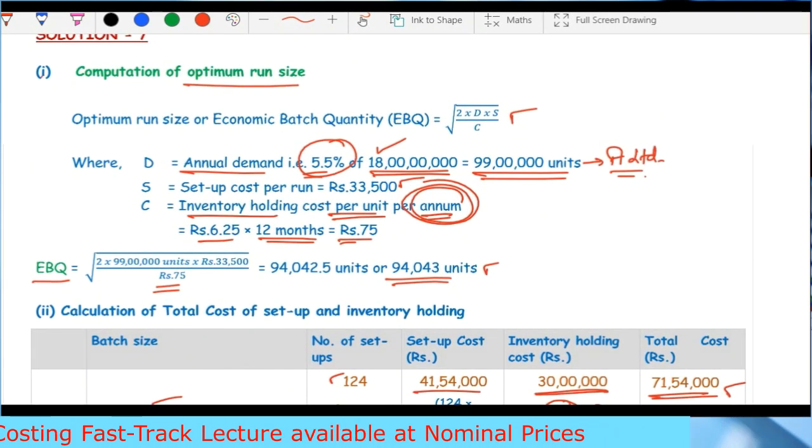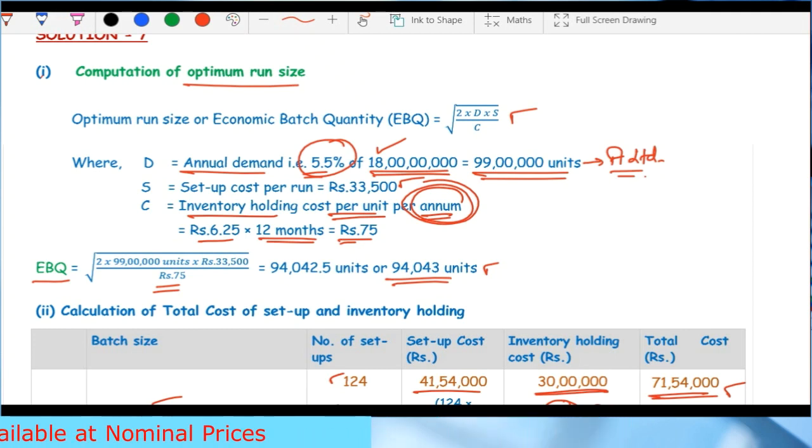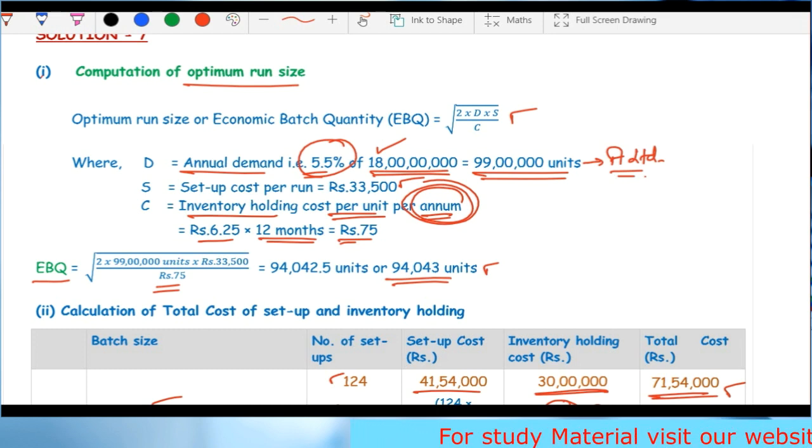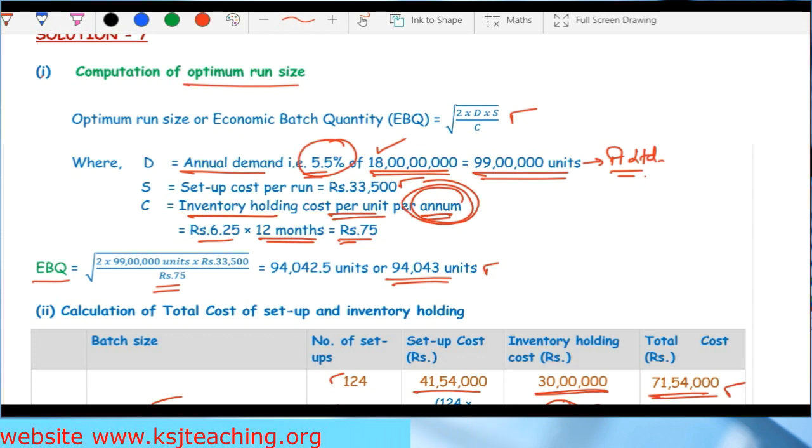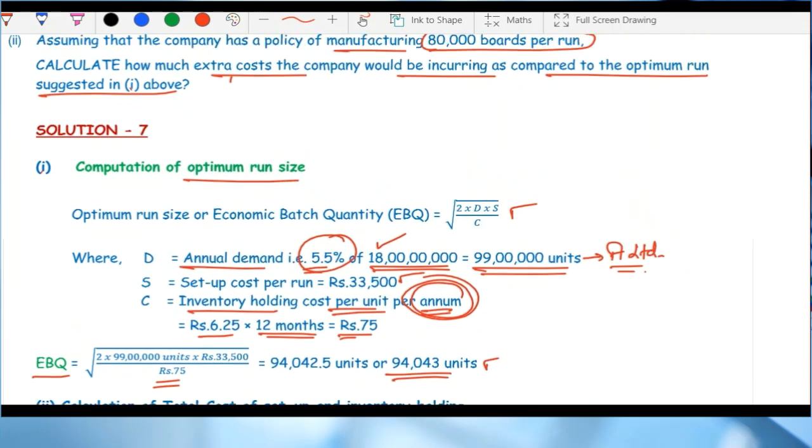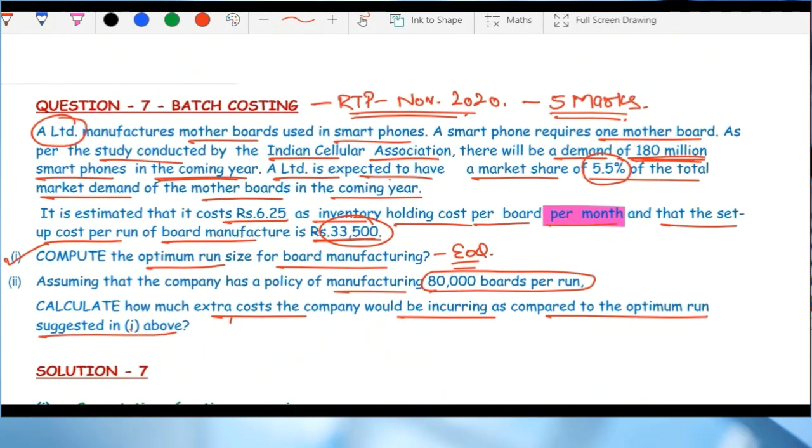This is very important - specifically note this because in examination time when you solve a question, you can make a mistake. I'm telling you where the wrong chances are so you don't make mistakes. This can save you marks. This batch costing question is over, maximum 5 marks will be asked.